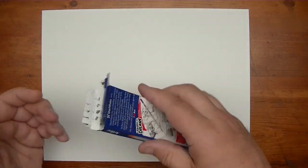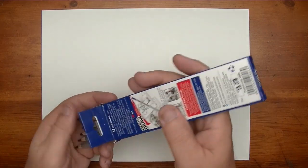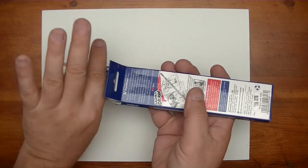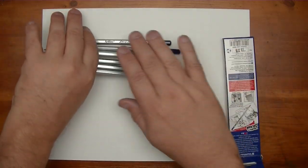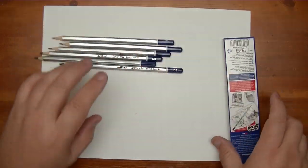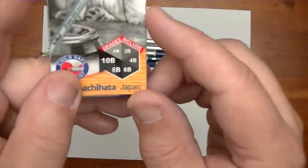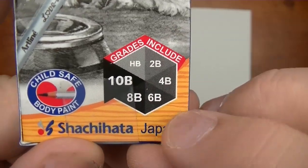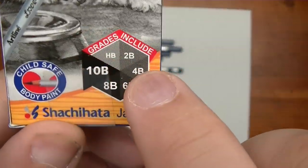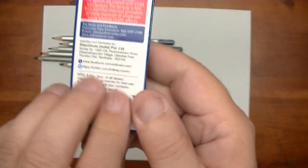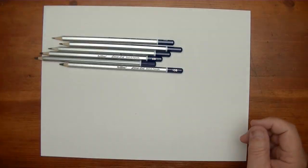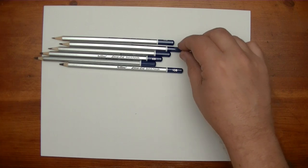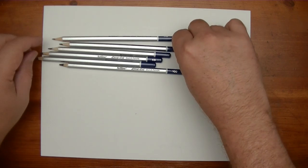Alright, awesome. Now let's pull them all out. Now we're looking at HB, 2B, 4B, 6B, 8B, 10B. All the nice dark shades. So these are all dark pencils. So I'm just going to grab one of them here. I'll just grab this one here and let's just take a look at the look of the pencil.